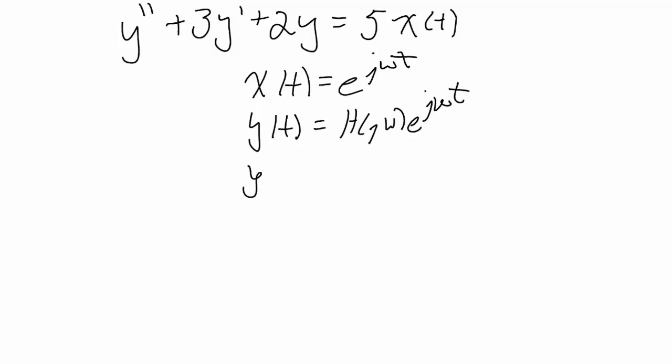Therefore, y prime will be h of j omega is just a constant. Again, possibly a complex constant. We take our derivative of e to the j omega t, which gives us j omega, comes out in front, multiplied by e to the j omega t.